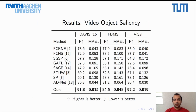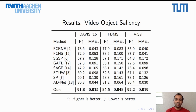Next, we apply our method to the task of video object saliency, which is very similar to unsupervised video object segmentation. However, the metrics are slightly different: MAE stands for Mean Absolute Error, and F-score is based on Precision and Recall. We evaluate our method on the Davis, FPMS, and Visal datasets for video object saliency, and it outperforms all existing state-of-the-art methods on all datasets evaluated.